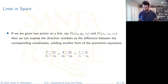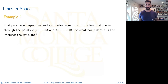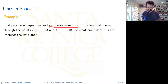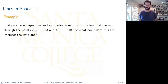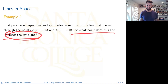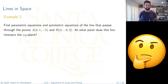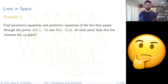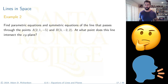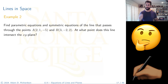Try this example: find parametric equations and symmetric equations for the line passing through two given points. Then find where the line intersects the XY plane. Ponder this, say something out loud about how you'd proceed, and try to work it out before we do it together.